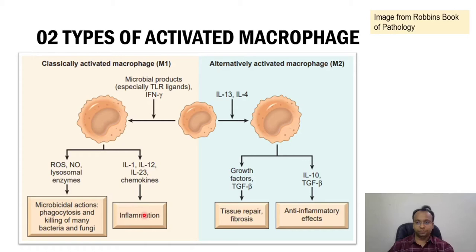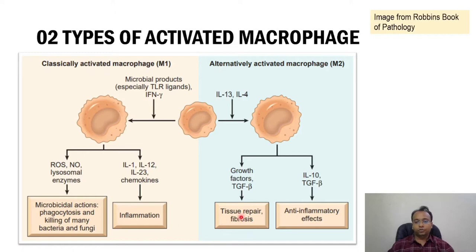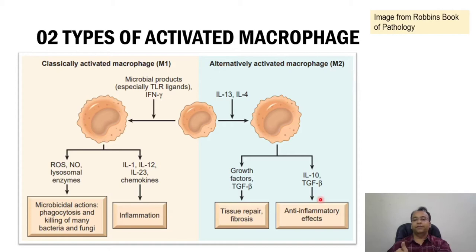Alternatively activated macrophage is activated by stimulus interleukin 4 and interleukin 13. Once the macrophage is activated via the alternative pathway, they can secrete growth factors and transforming growth factor beta, which have a role in tissue repair and fibrosis. If they secrete interleukin 10 and transforming growth factor beta, they can have anti-inflammatory effect. So classically activated macrophage has inflammatory effect, while alternatively activated macrophage has anti-inflammatory effect. This image is from Robbins' book of pathology.